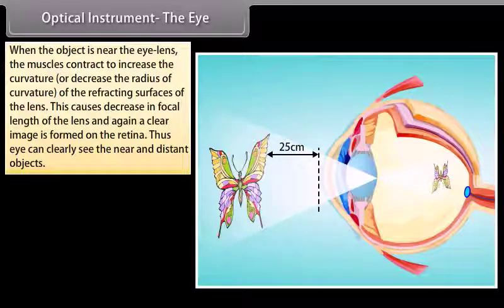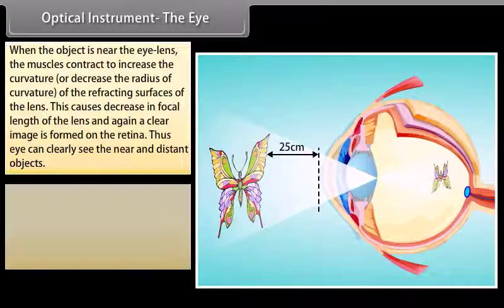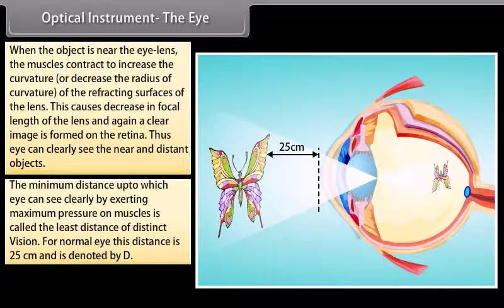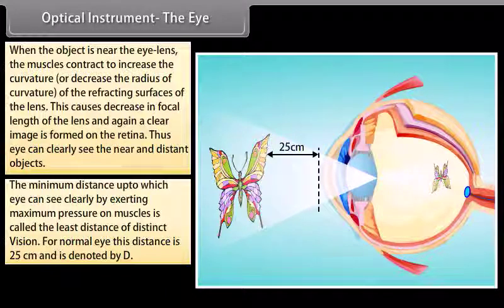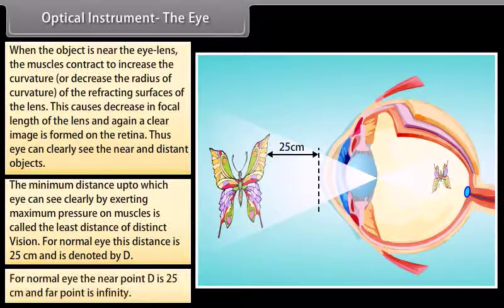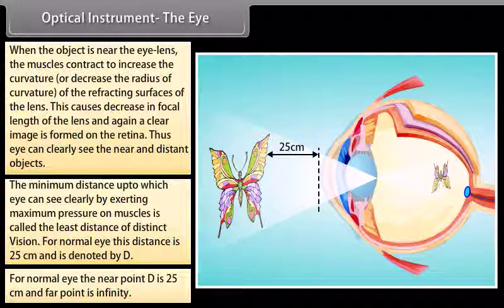The minimum distance up to which the eye can see clearly by exerting maximum pressure on the muscles is called the least distance of distinct vision. For a normal eye, this distance is 25 cm, denoted by D. The near point D is 25 cm and the far point is infinity.